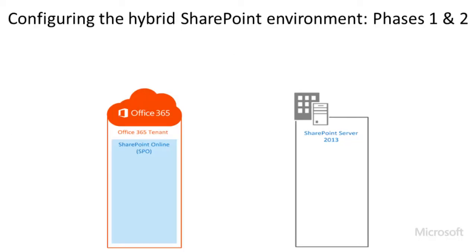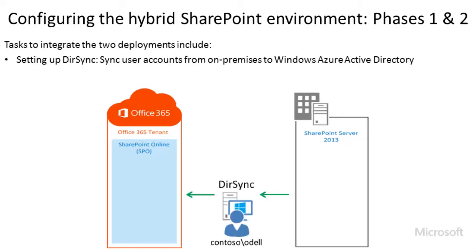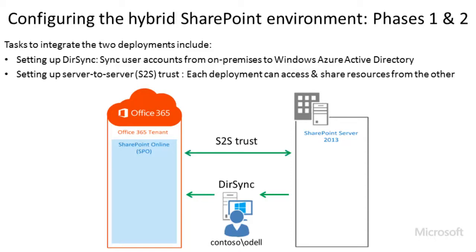Phases 1 and 2 will include tasks to integrate the two deployments, such as setting up Directory Synchronization, or DirSync, to synchronize user accounts from the on-premises directory service to Windows Azure Active Directory, and setting up server-to-server trust so that each deployment can access and share resources from the other deployment. It's beyond the scope of this video to discuss Phases 1 and 2 any further. For details about all phases of the hybrid configuration process, you can consult the hybrid SharePoint resources on Microsoft TechNet at the URL shown at the bottom right of this slide. We'll show this URL again at the end of the video.